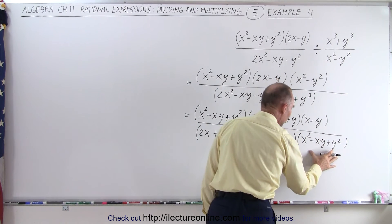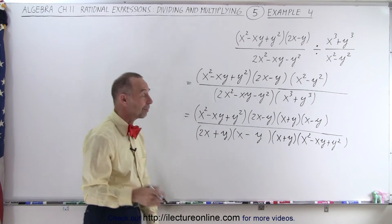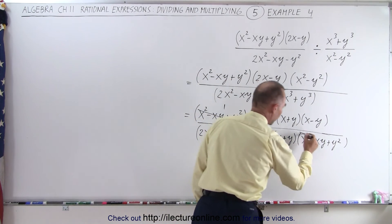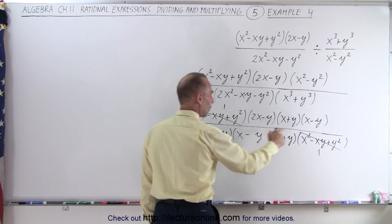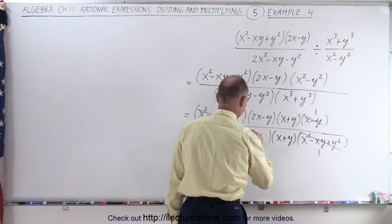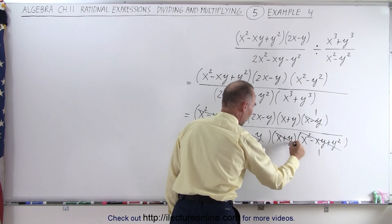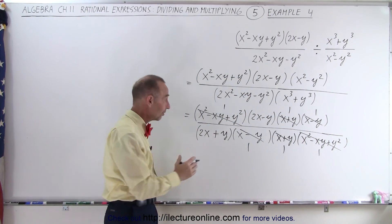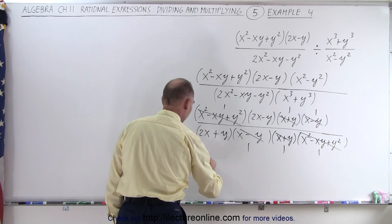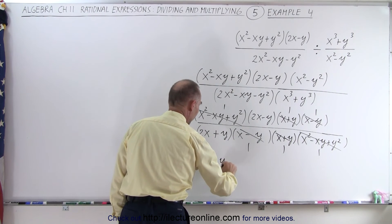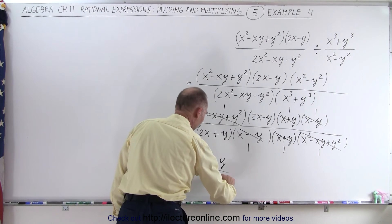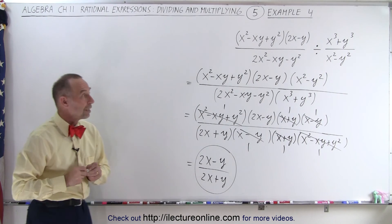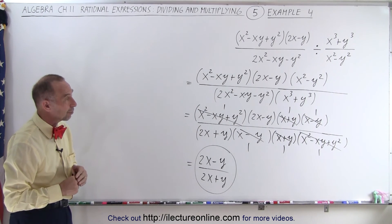I realize that x squared minus xy plus y squared appears in both numerator and denominator, so those simplify. We also have x minus y canceling with x minus y, and x plus y canceling with x plus y. After all the cancellations, we're left with 2x minus y in the numerator and 2x plus y in the denominator.